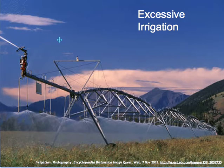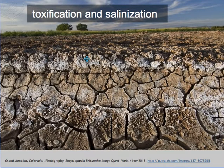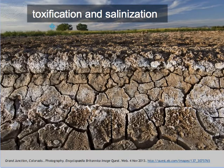Another threat to soil comes from excessive irrigation, particularly in regions starved of natural rainfall. The water that is used for irrigation brings with it various chemicals which collect in the soil after repeated irrigation, leading to toxic conditions for plants and overall very salty conditions in the soil.